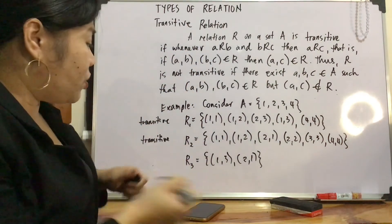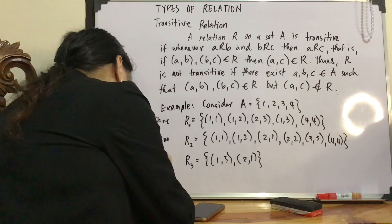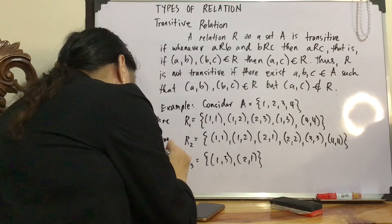We don't have (2,3). So R3 is not transitive. Okay? You got it?